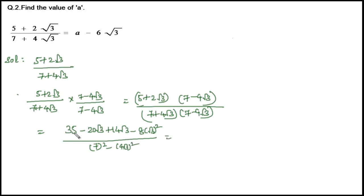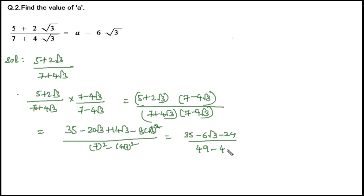This equals 35, and the like terms −20√3 + 14√3 give −6√3, minus 8 × 3 = 24, all divided by 49 − 4² × (√3)² = 49 − 16 × 3 = 49 − 48 = 1. So this equals (35 − 24 − 6√3) / 1 = (11 − 6√3) / 1, which is 11 − 6√3.